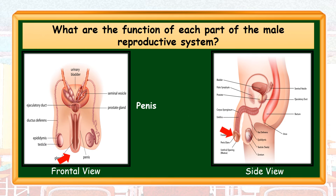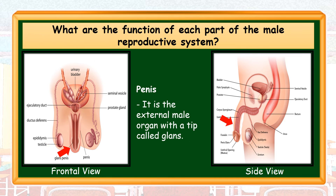Penis — it is the external male organ with a tip called glans. The glans is the foreskin that may be removed through circumcision.